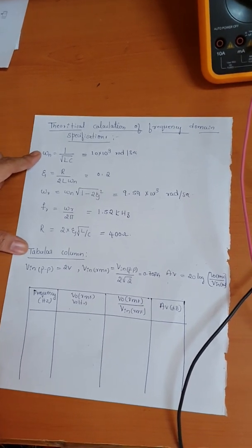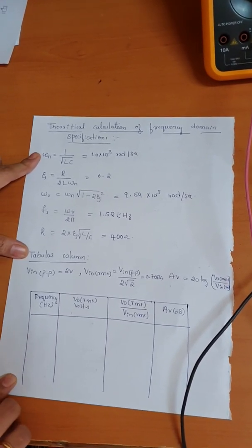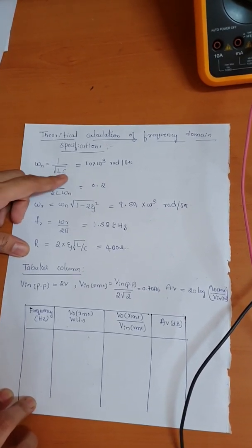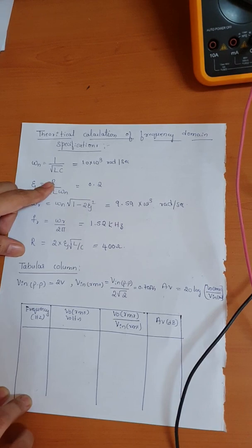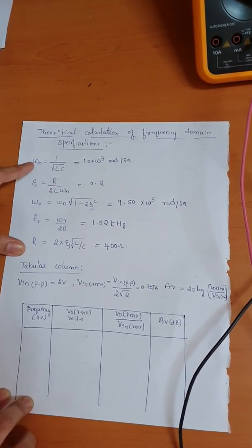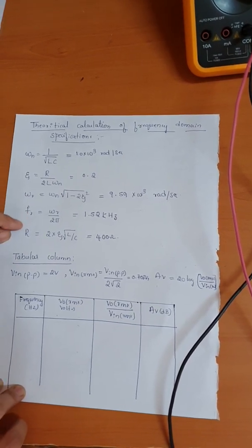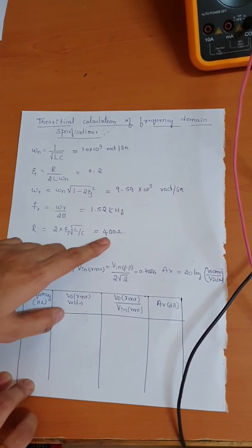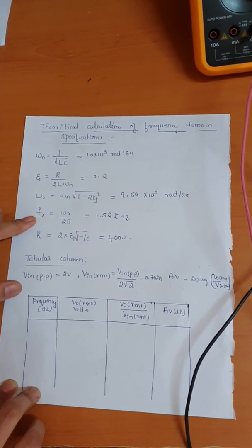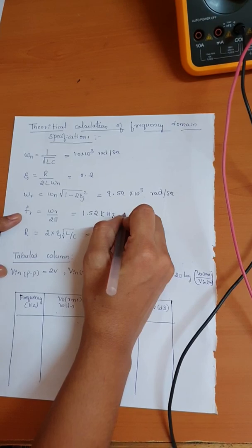This is the theoretical calculation for frequency domain specification. Since the values of L, C, and R are known from the series RLC circuit, we have calculated ωn, ζ (zeta), and ωr. The resonant frequency and R have been obtained — R is 400 ohms.